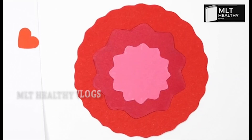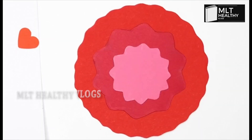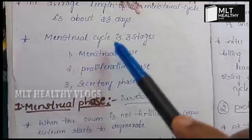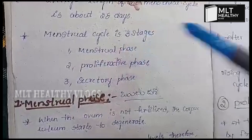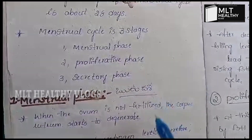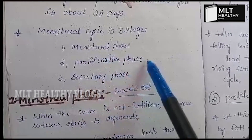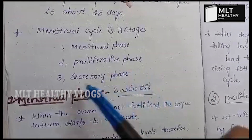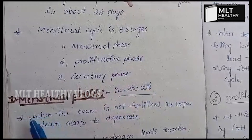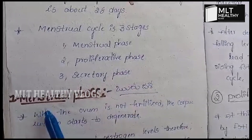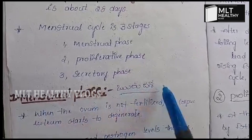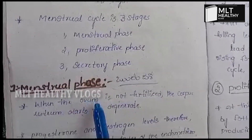Normally the menstrual cycle is 28 days and consists of 3 stages: first, the Menstrual Phase; second, the Proliferative Phase; and third, the Secretory Phase.